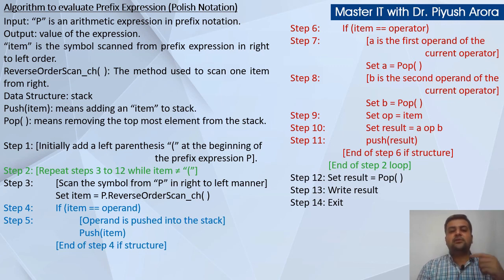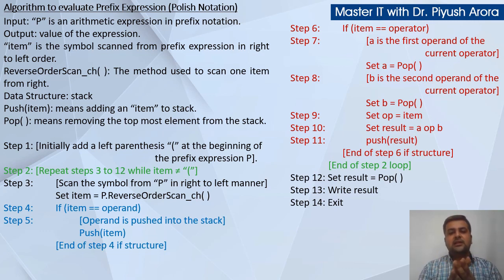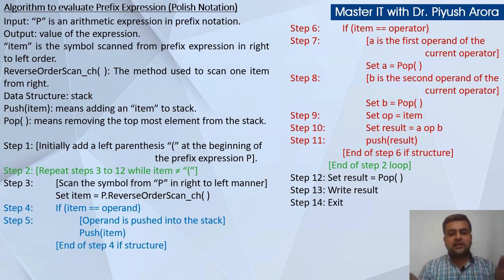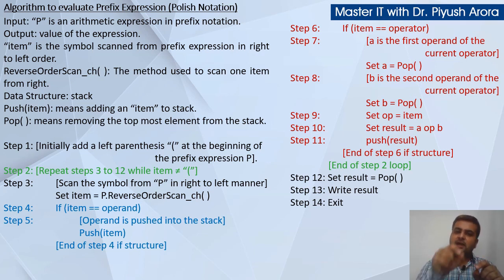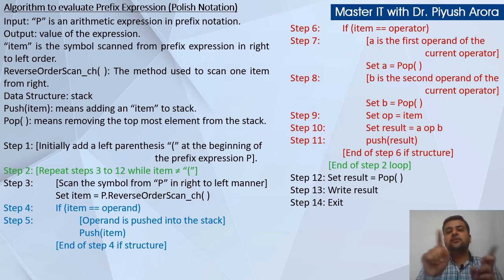Step number 11: push the result — yani ki jo aapka result aayega evaluation karne ke baad, use stack mein push kar dijiye. End of step 6 if structure. Ek ek variable ko scan karke complete kar denge, poora while loop complete ho jayega. End of step 2 loop — ek ek variable scan karenge, jab opening parenthesis aa jayega humara kaam complete ho jayega. Step number 12: set result equal to pop — stack ke andar ek operand jo last mein push kiya hoga, use pop kar dijiye aur use result variable mein assign kijiye. Step number 13: write result — usse print / display kar dijiye. And exit.